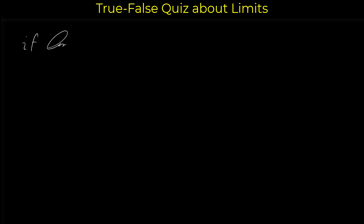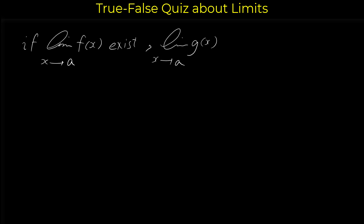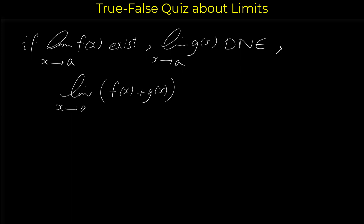Now look at the second statement: if the limit of f(x) as x approaches a exists, but the limit of g(x) as x approaches a does not exist, then the limit of f(x) + g(x) as x approaches a does not exist. We want to figure out if this statement is true or false.